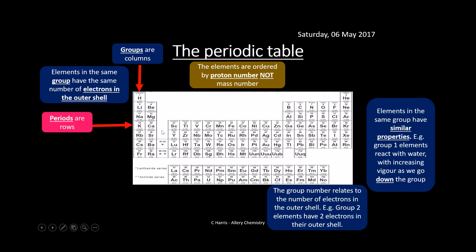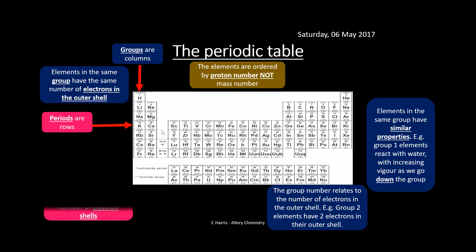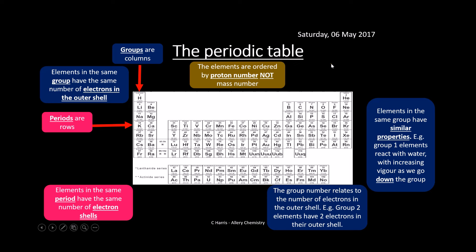Periods are rows — this is going across. Elements in the same period have the same number of electron shells. So elements in this period all have four electron shells, this one will have three, this one will have two, and that will have one.